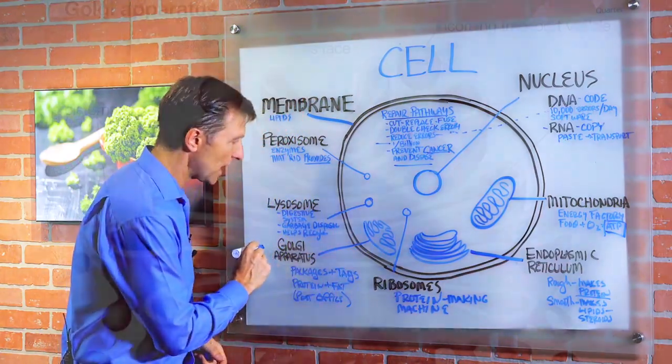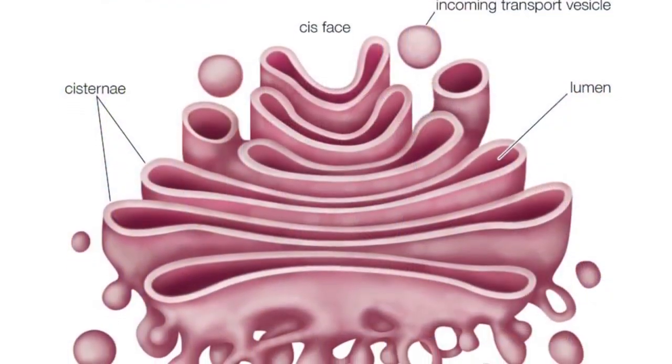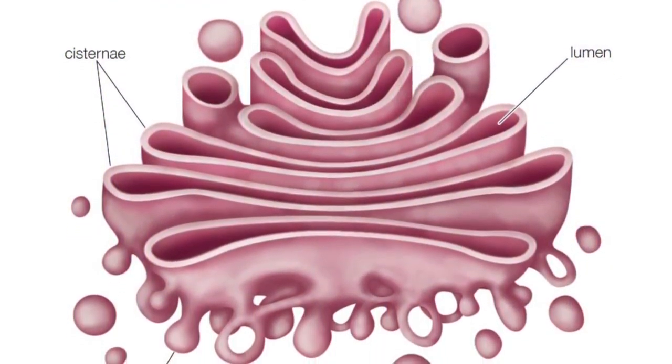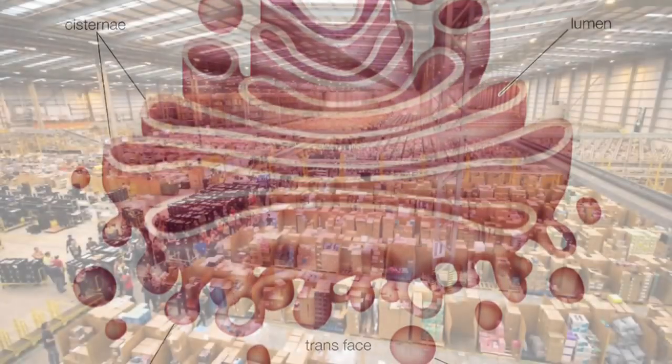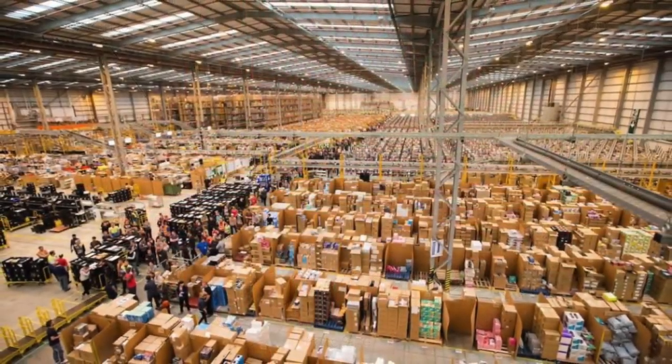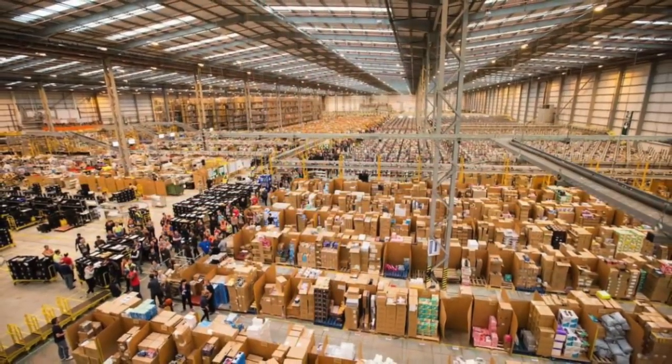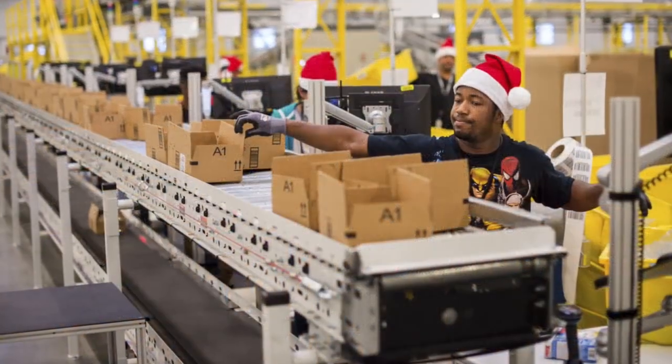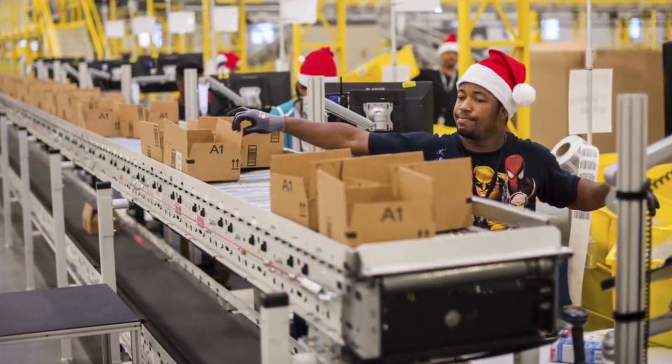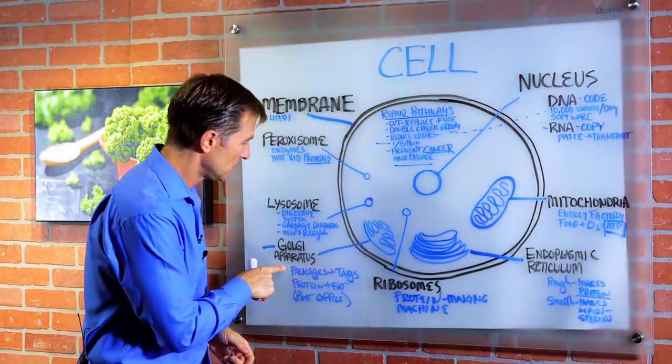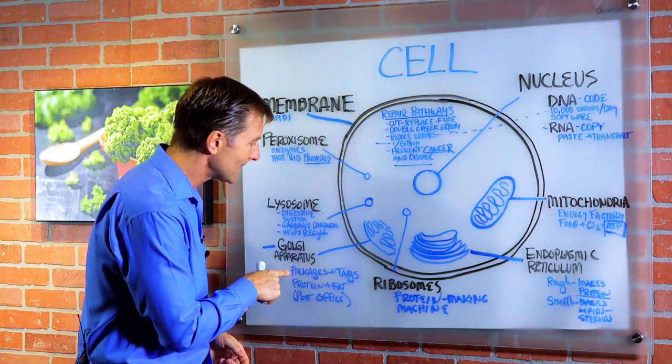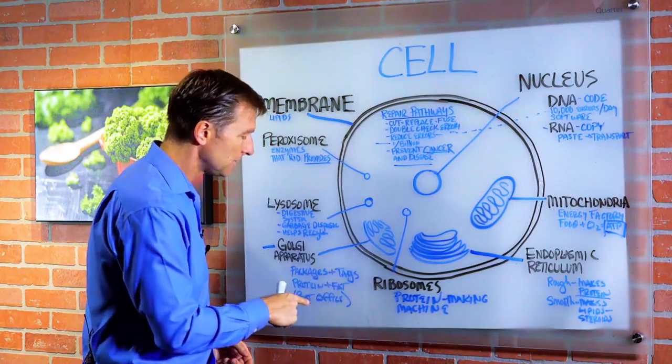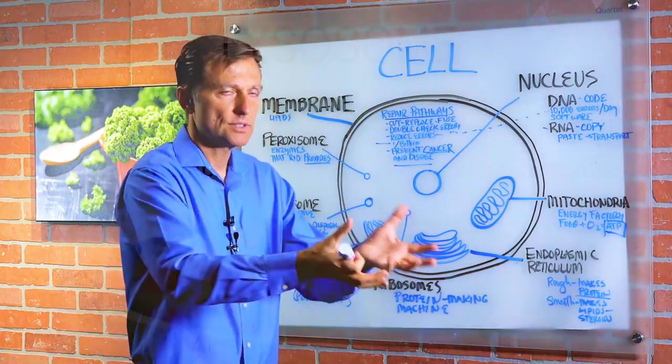Then we have something called the Golgi apparatus. The Golgi apparatus is similar to the post office, or you probably order things from Amazon. Well, they have a whole shipping department where they package the item that you bought, and then they put a scanning code on it. They tag it. Well, that's what this unit does. The Golgi apparatus packages and tags protein and fat to then be shipped out to the other parts.